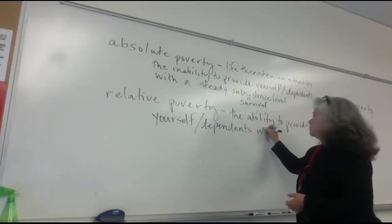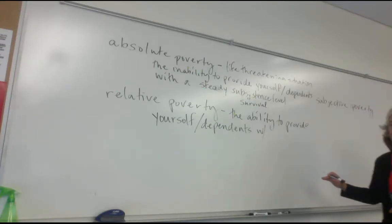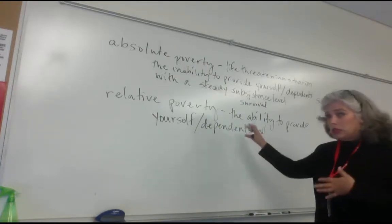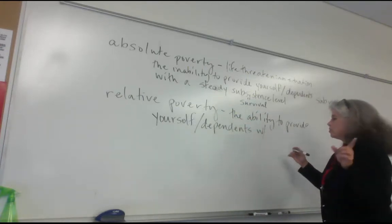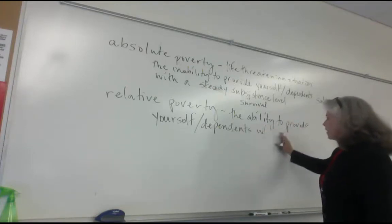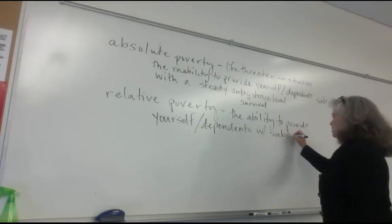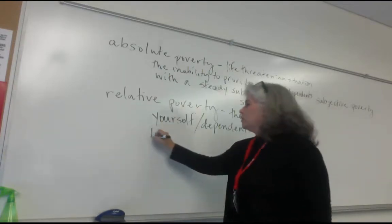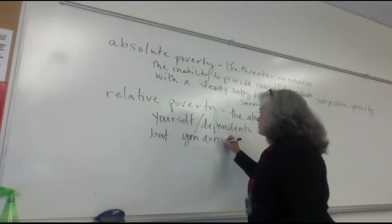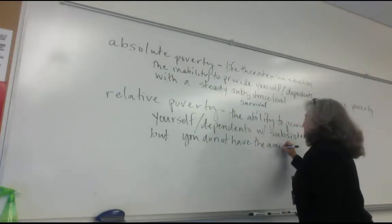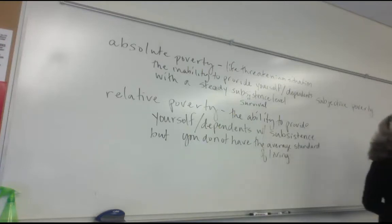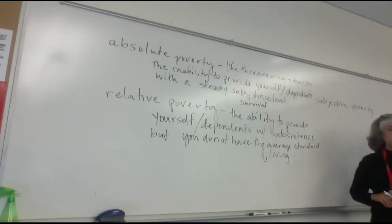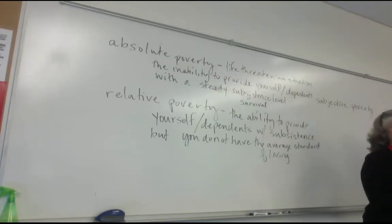Is relative poverty the most common type in America? Let's look at it. Relative poverty: you have the ability to provide yourself and your dependents with subsistence, but you do not have the average standard of living. Since a van down by the river is not the average standard of living — but you can clearly subsist there — that would be relative poverty.